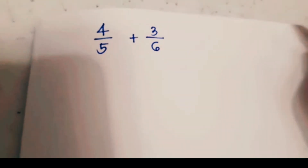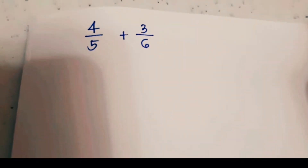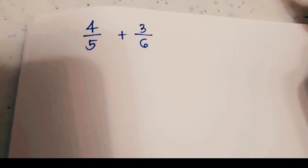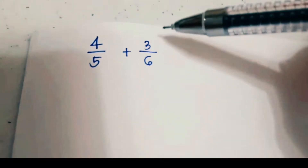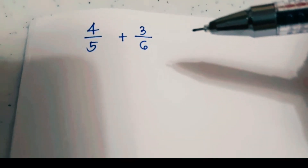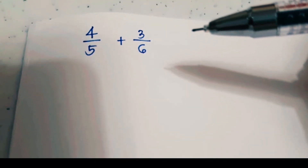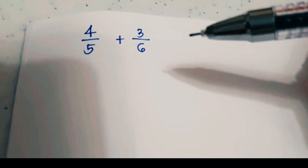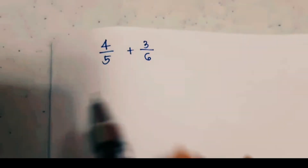Here is the addition of dissimilar fractions. We begin by examining the fractions. Since 4/5 plus 3/6 are dissimilar fractions, we need to convert them to similar fractions first. Always remember that when you add and subtract fractions, all you have to do is add the numerators and copy the denominator. But we cannot do that because the two fractions are dissimilar ones, so we begin by finding the least common denominator.